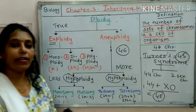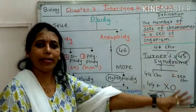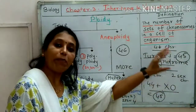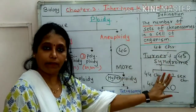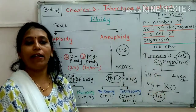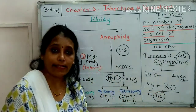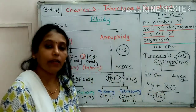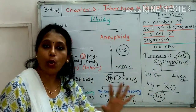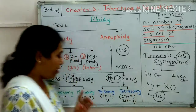Turner's syndrome results in a disorder — it is an abnormality. The person is female, but in those females physical development is not proper. The menstrual cycle is absent, and as the menstrual cycle is absent, there is no egg formation and no fertility.